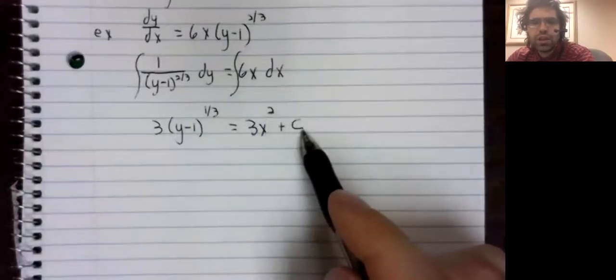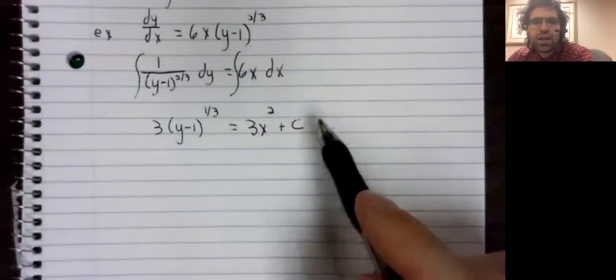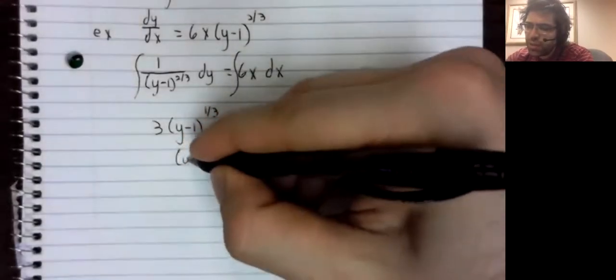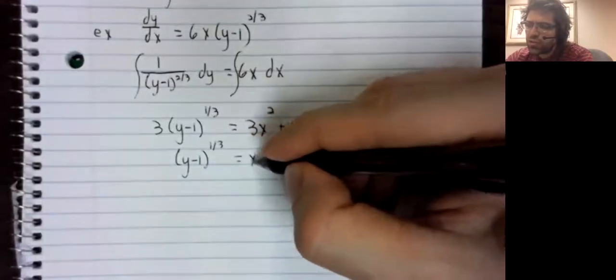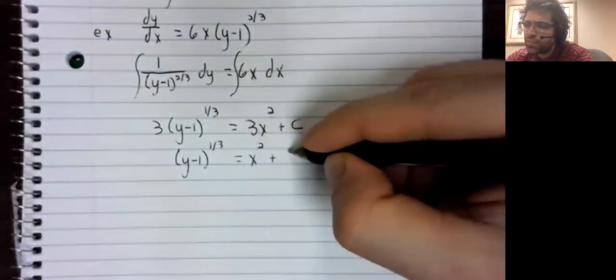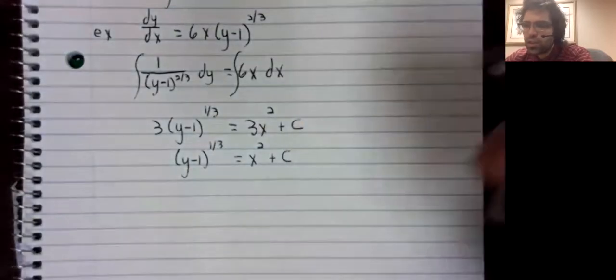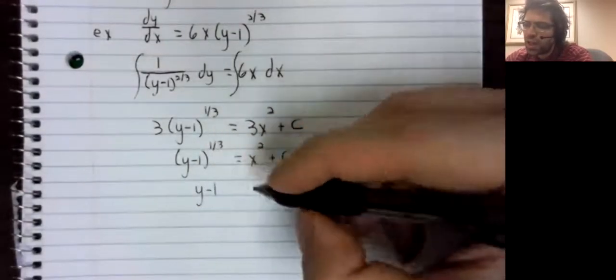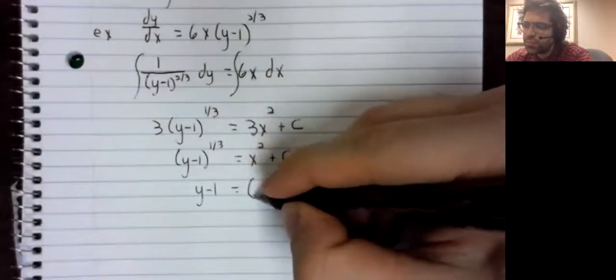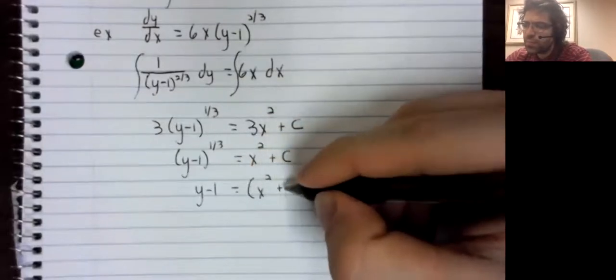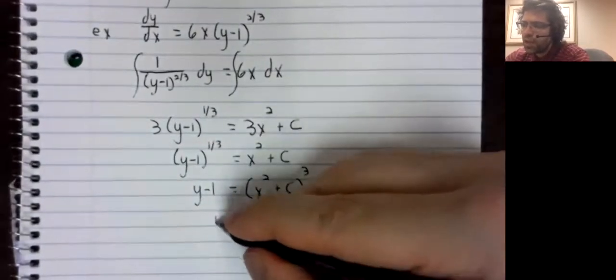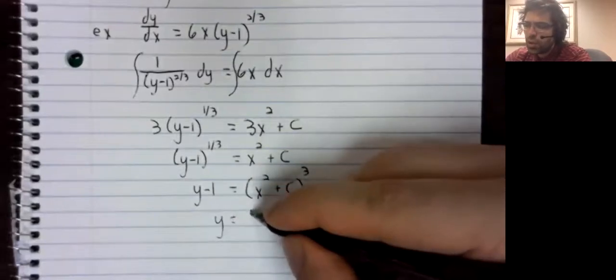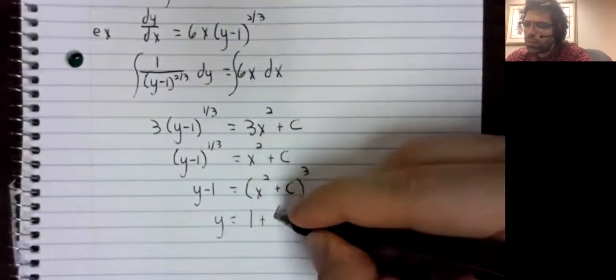We'll divide both sides by 3. An arbitrary constant divided by 3 is still an arbitrary constant. Cube both sides, and then solve for y.